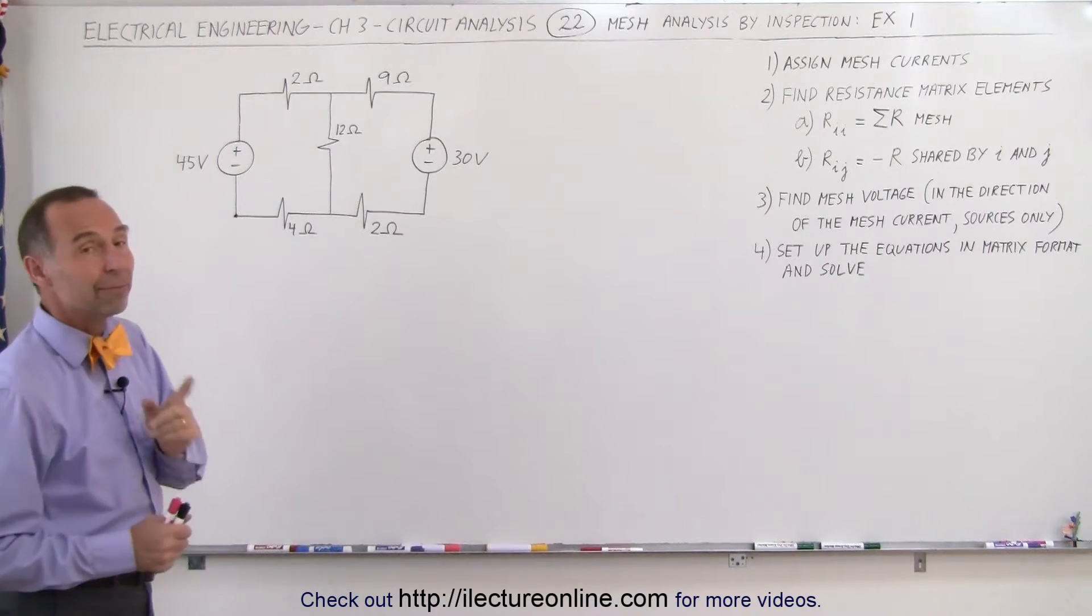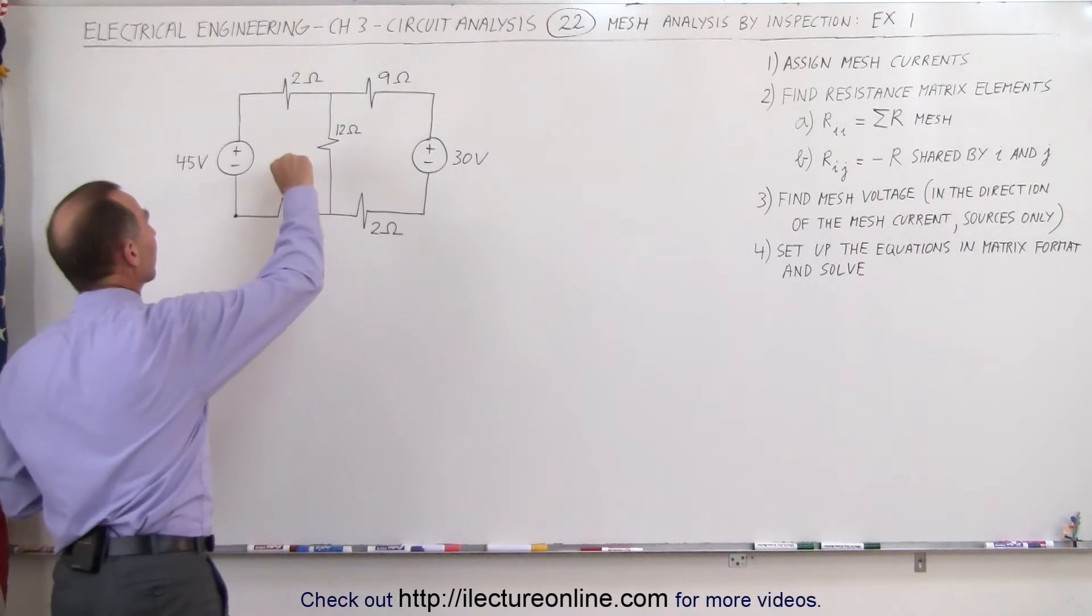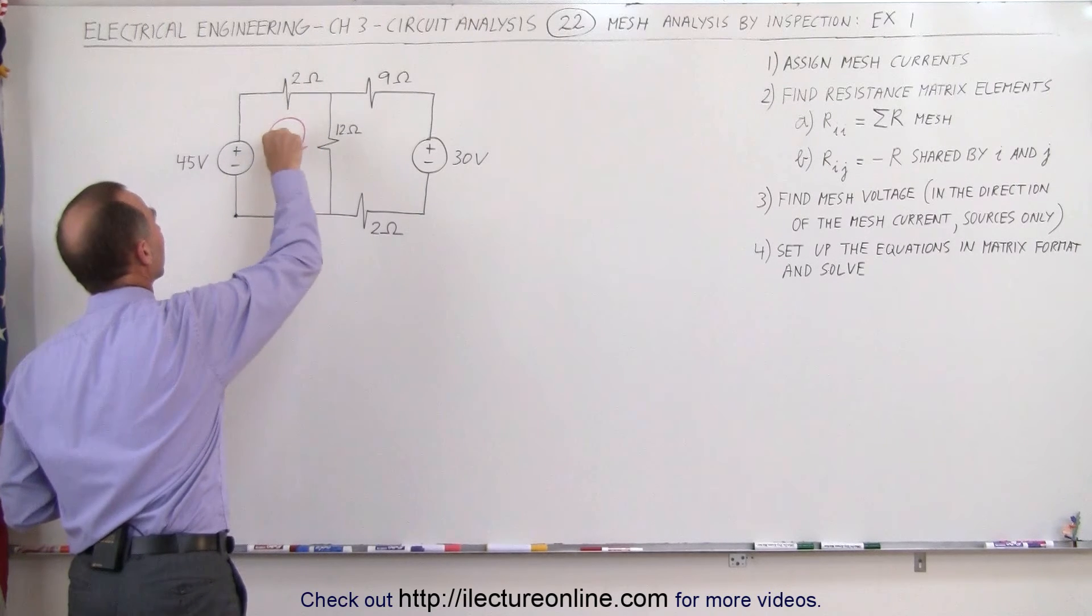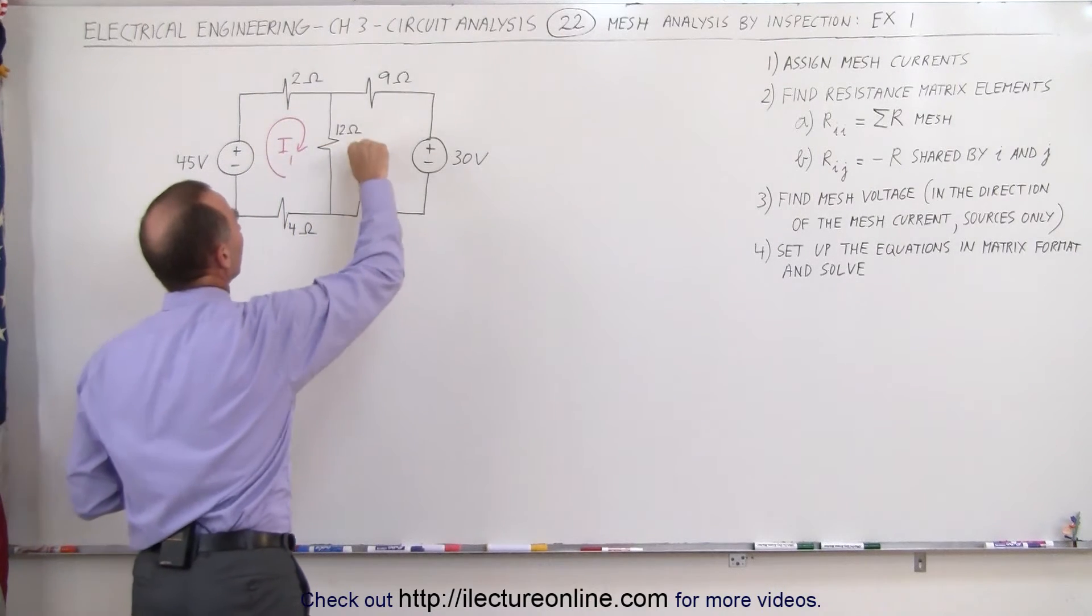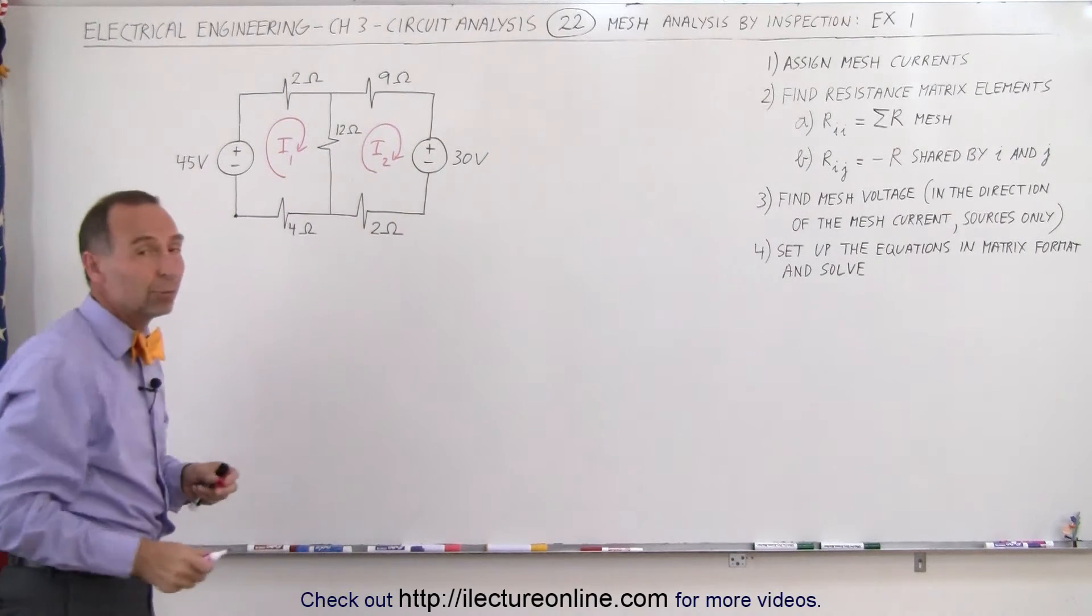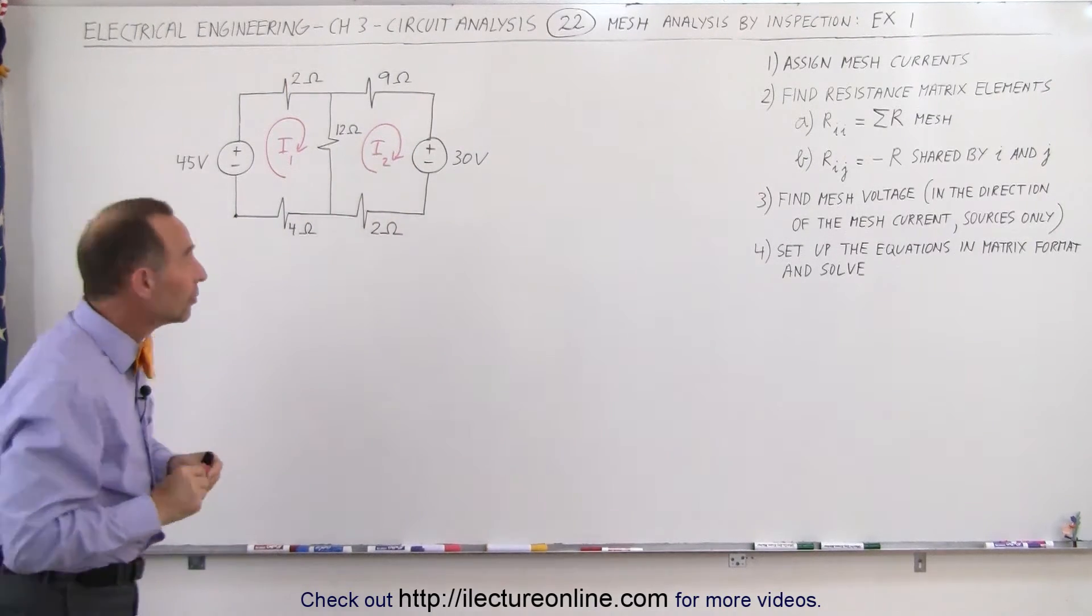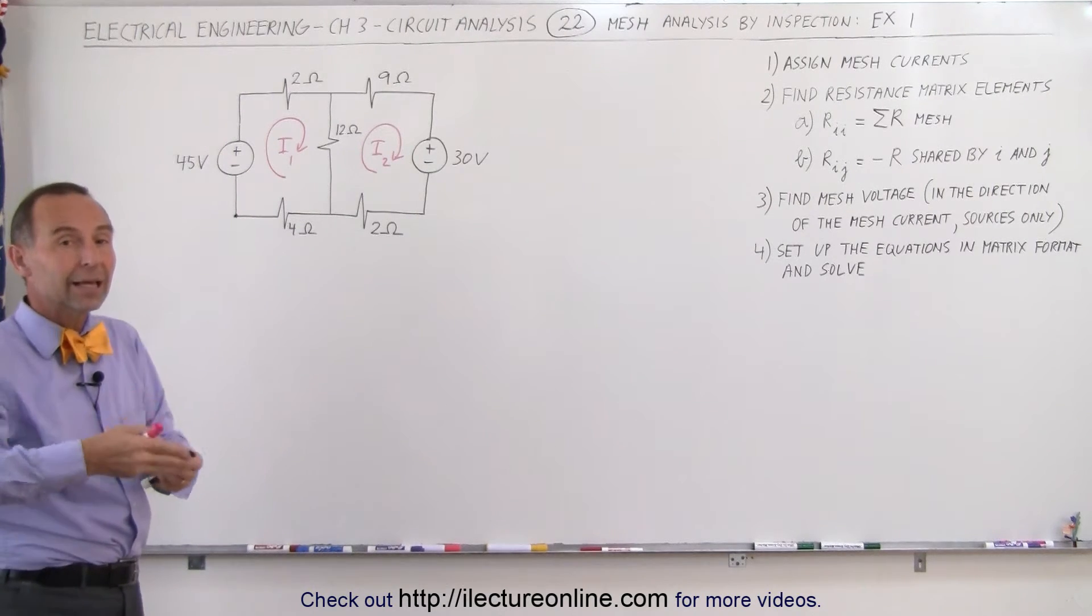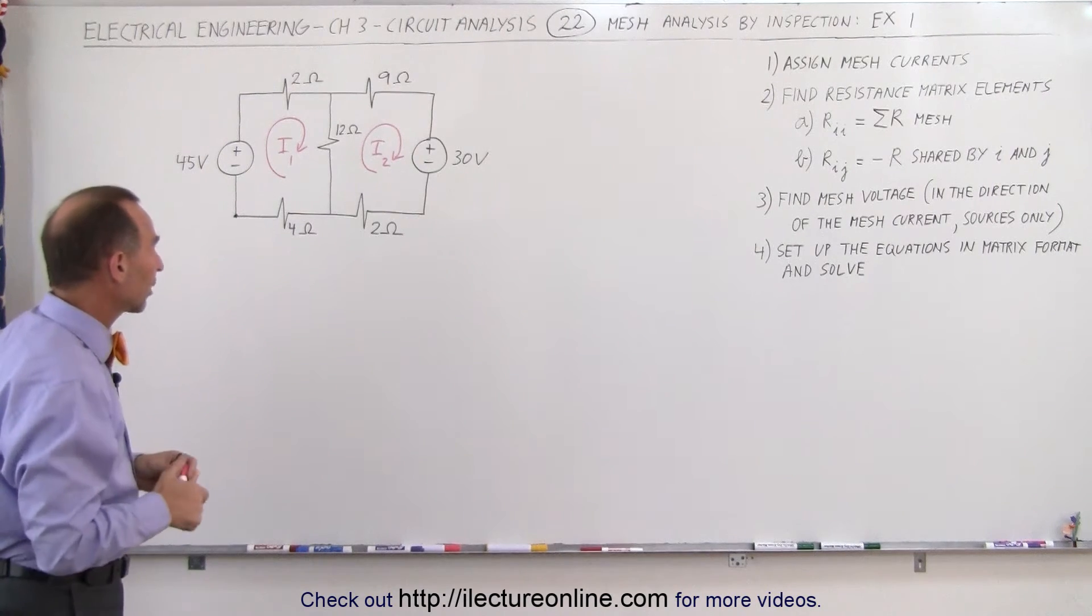First we want to assign the mesh currents to each of the two meshes. Here we can say this is current one and current two. I prefer the clockwise direction, but it really doesn't matter. If the result that you get is a negative number, then you simply know that the current is actually in the opposite direction.